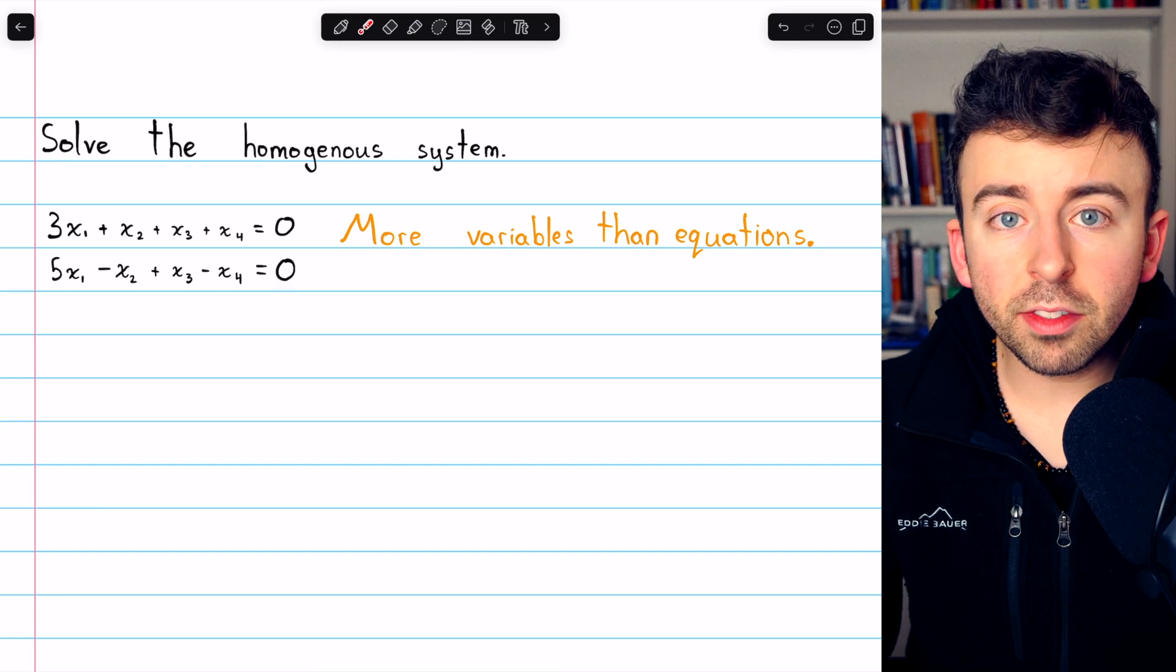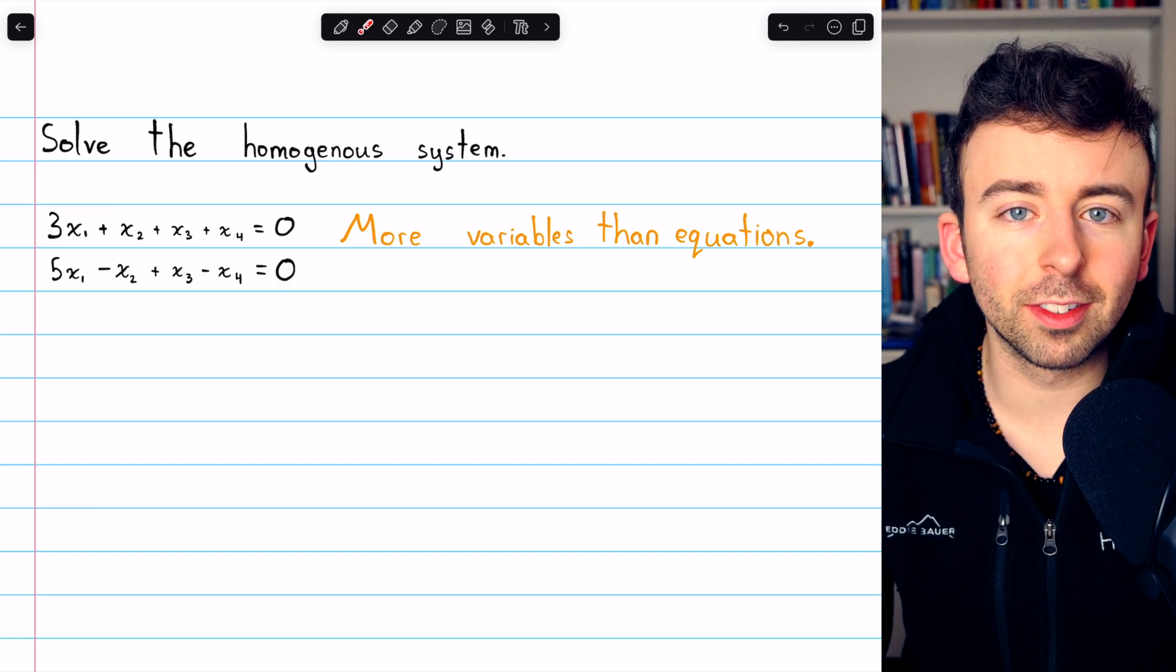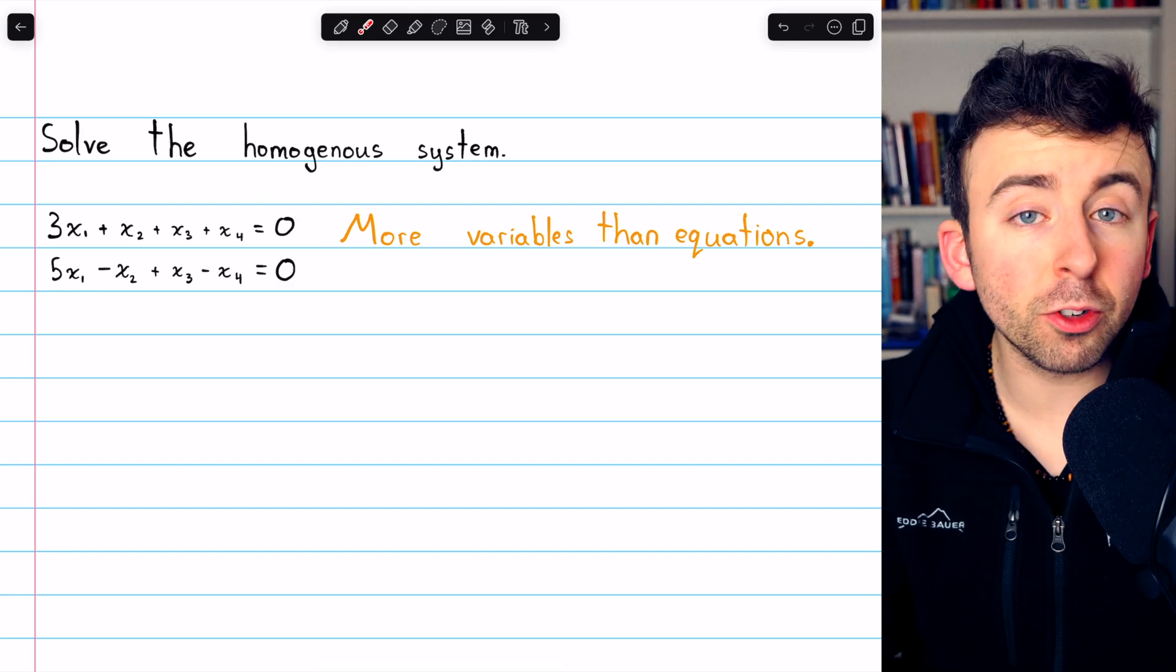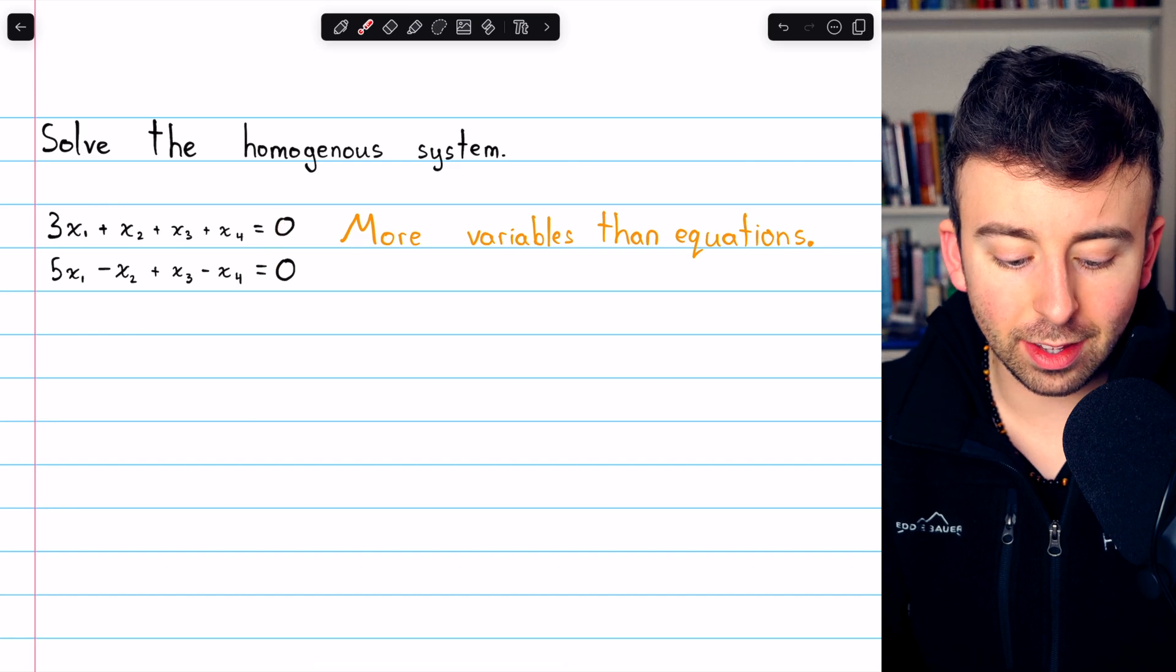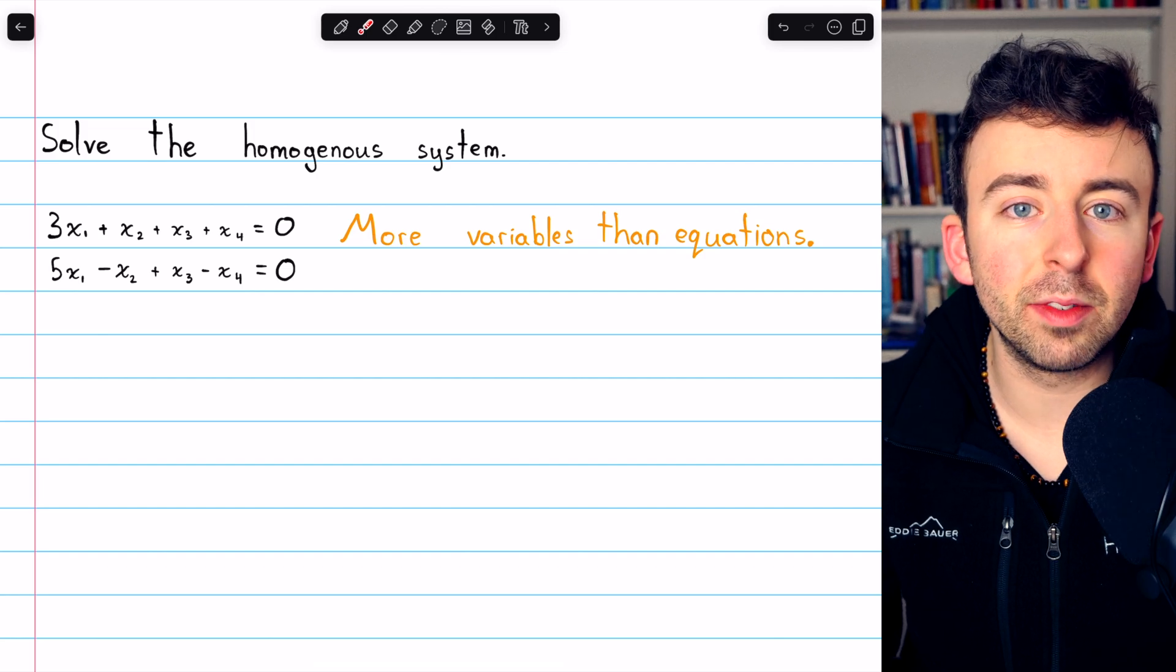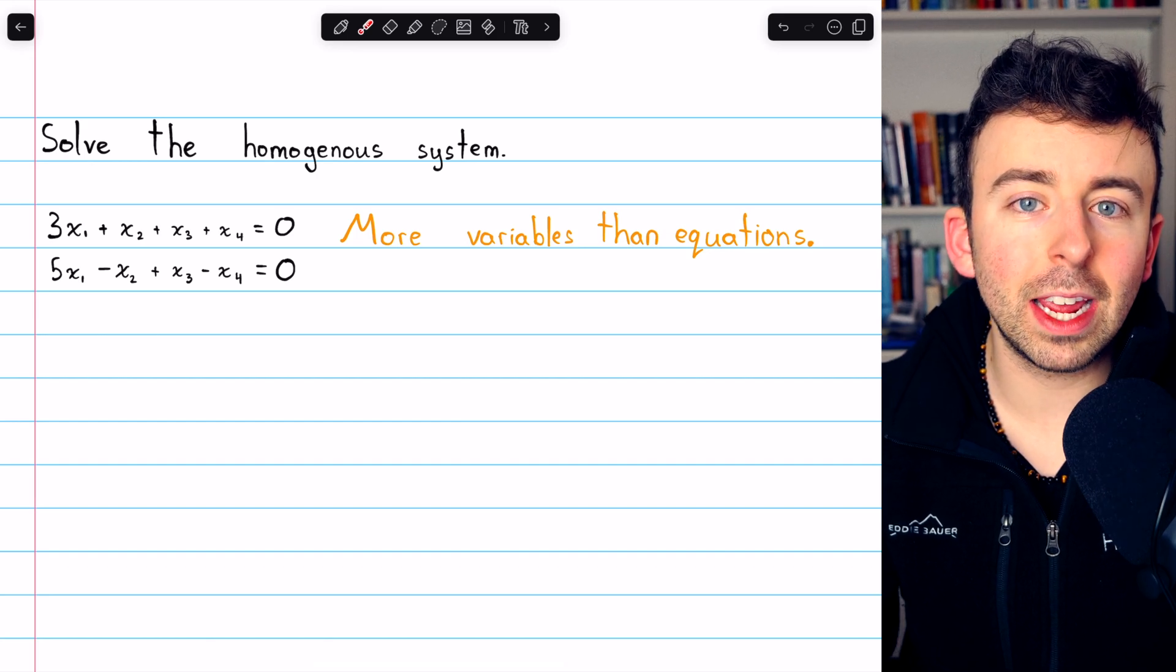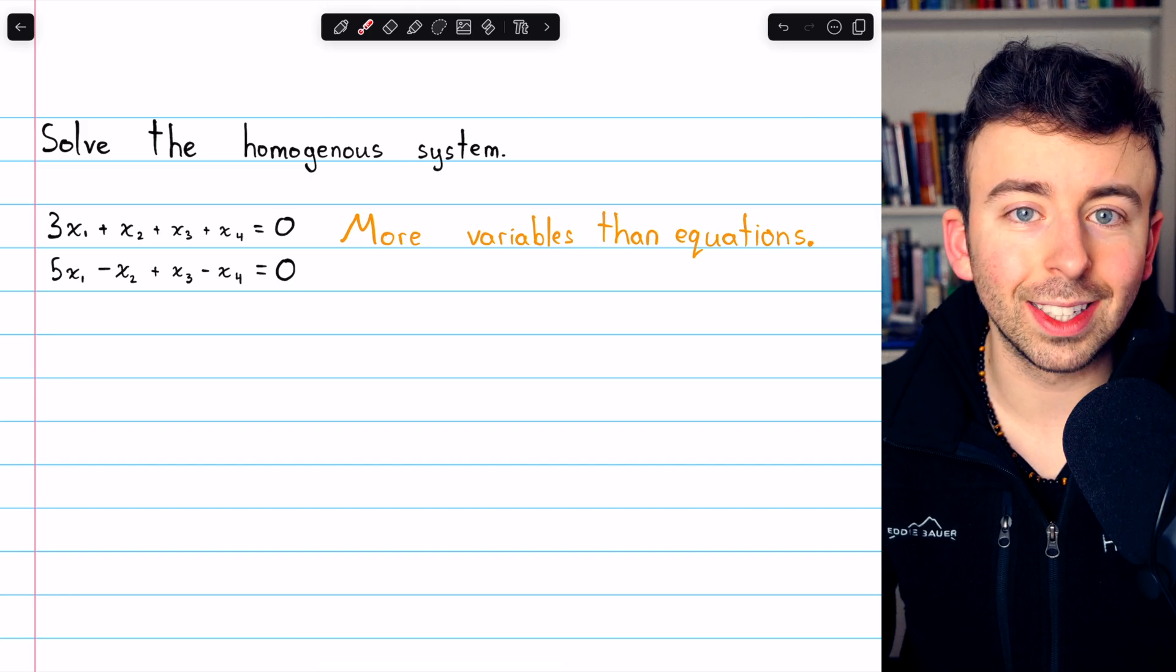So it's a consequence of the free variable theorem for homogeneous linear systems, which I'll leave a link in the description for my video on that theorem. It's a consequence of that theorem that this system for sure is going to have infinitely many solutions. It has more equations than variables. So we're going to have some free variables, which means we're going to have infinitely many solutions. We already know that, but we can proceed with solving this system using Gauss-Jordan elimination in order to figure out exactly what those infinitely many solutions are going to look like.